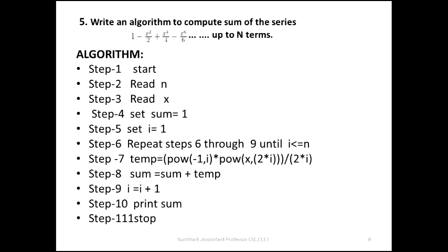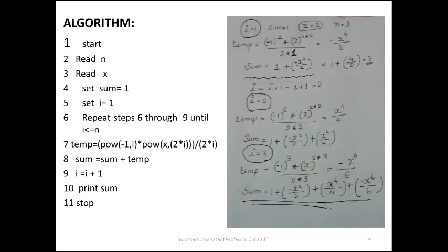Calculate temp, then calculate the delta and each term. For example: start, read n — say 3 terms — then read x, say x equals 2. Initially set sum equal to 1, set i equal to 1. Repeat steps 6 through 9 until i is less than or equal to n. When i equals 1: condition 1 less than or equal to 3 is true, so temp equals (-1)^i times x^(2i) divided by 2i.